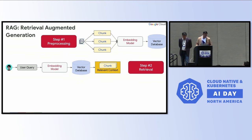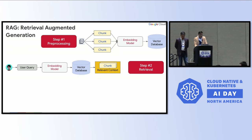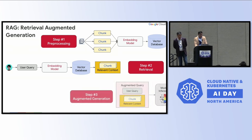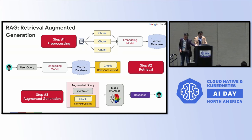The second part is the retrieval phase. After chunking is done, the user provides an input, using the same vector database where the data is available. Based on the chunk and the kind of request put in, we get augmented generations as a response using the LLMs. After pre-processing and chunking, the final result uses model inference to get the output.